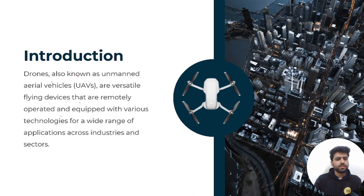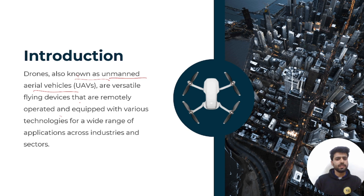Drones are actually flying robots — a robot that can be flown in the air. Drones are also known as unmanned aerial vehicles, meaning a vehicle that can be flown in the air without any pilot.